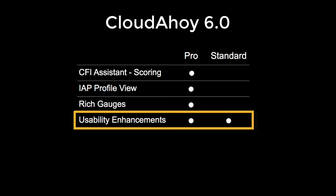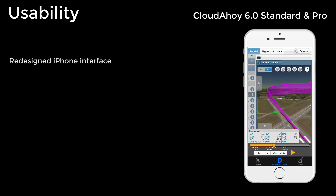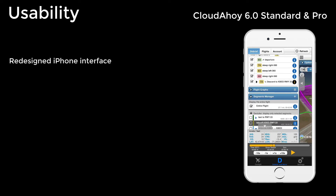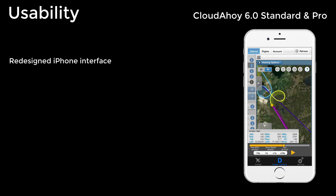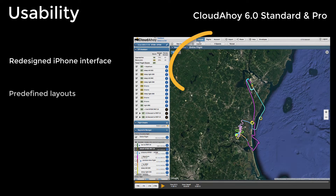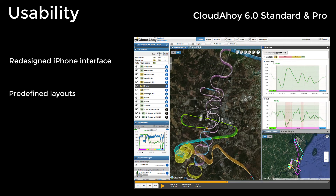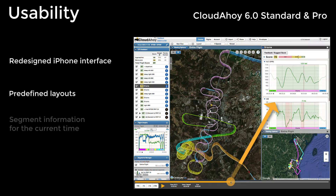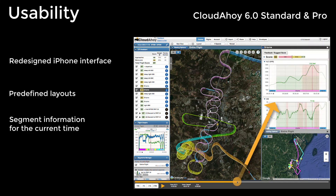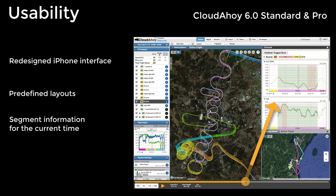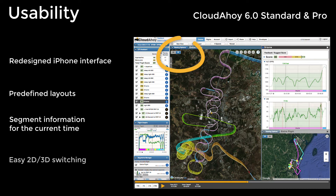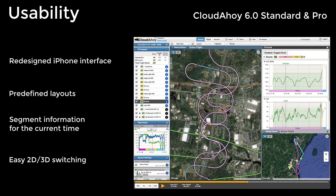Now we'll talk about the new Cloud Ahoy 6.0 capabilities common to both Pro and Standard. We made significant usability improvements: we redesigned the iPhone interface, making it easier to use for debrief; added more predefined screen layouts; automatically switch segment information according to the current time in the flight; and added one-click switching between 2D and 3D.